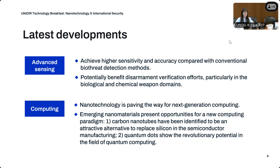In the computing field, nanotechnology is paving the way for next-generation computing. Current silicon technology for microchips is approaching its physical limits, so emerging nanomaterials such as graphene, carbon nanotubes, and quantum dots are presenting opportunities for a new computing paradigm. Carbon nanotubes — essentially tubes made of carbon with a diameter in the nanometer range — have been identified as a very attractive alternative to replace silicon in semiconductor manufacturing, though their advantage in real-world application is still yet to be seen.